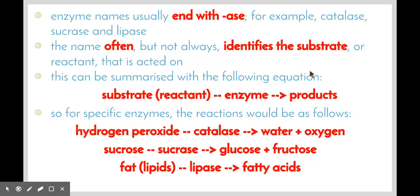Enzyme names usually end with the suffix "-ase" — for example, catalase, sucrase, and lipase. The name often, but not always, identifies the substrate or the reactant that the enzyme acts on. This can be summarized with the following equation: the substrate reacts with the enzyme acting on it to bring about the products. We can have a reaction where the substrate is broken down into two products, or a reaction where two or more substrates are brought together to create a product.